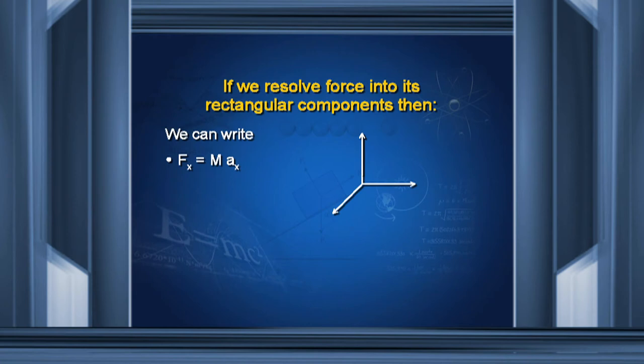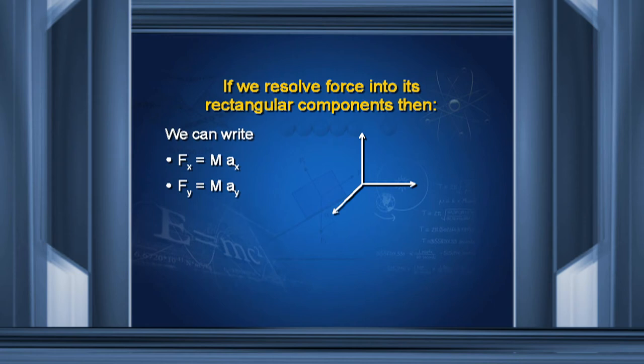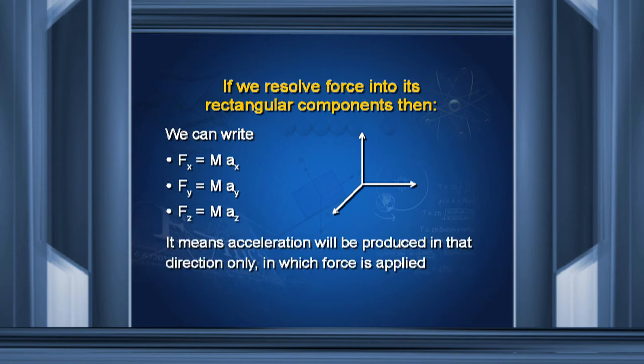Since acceleration is a vector quantity and force is also a vector quantity, resolving force into its rectangular components: force along the x-axis equals mass into acceleration along the x-axis, i.e., Fx = MAx. Similarly, Fy = MAy and Fz = MAz. This means acceleration is produced only in the direction in which force is applied — if force is along x, acceleration is along x; if along y, acceleration is along y; if along z, acceleration is along z.